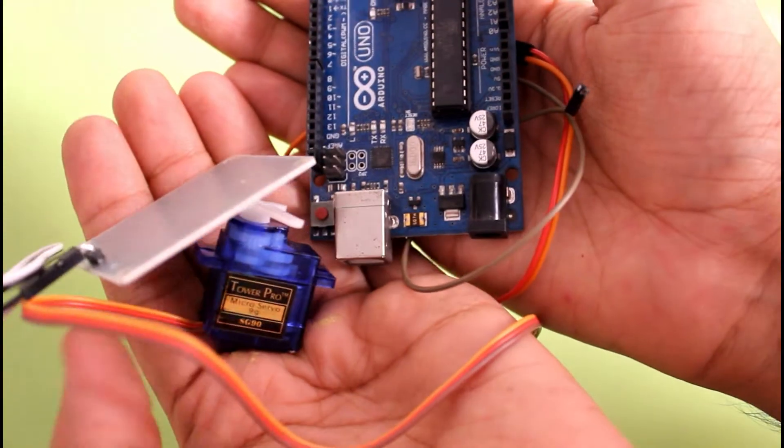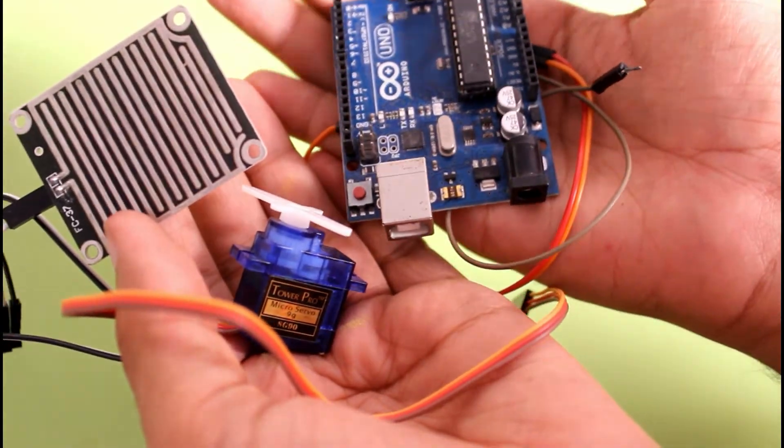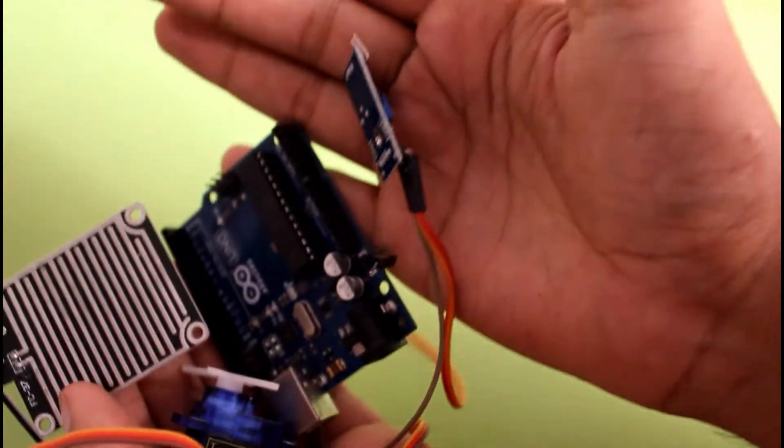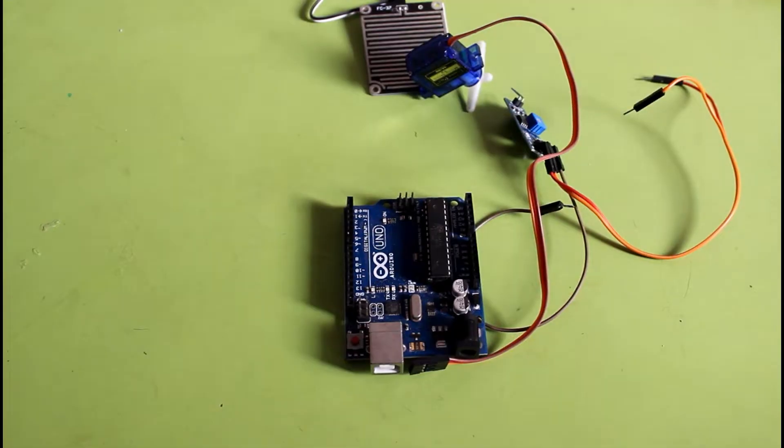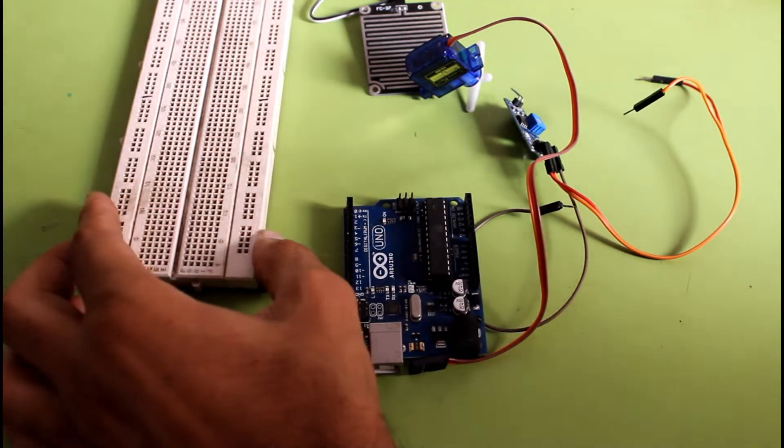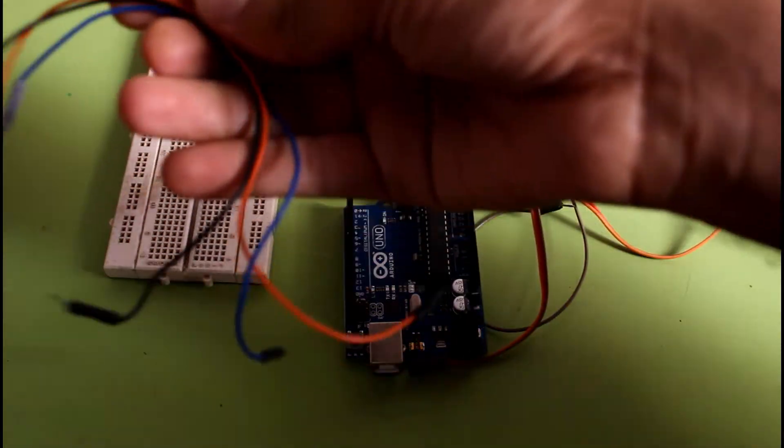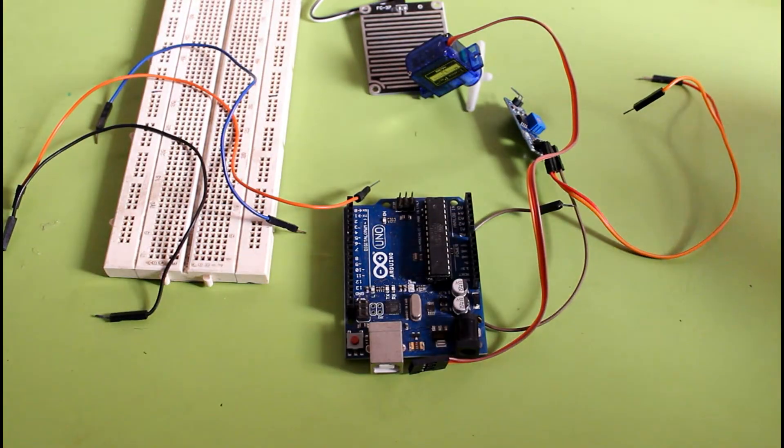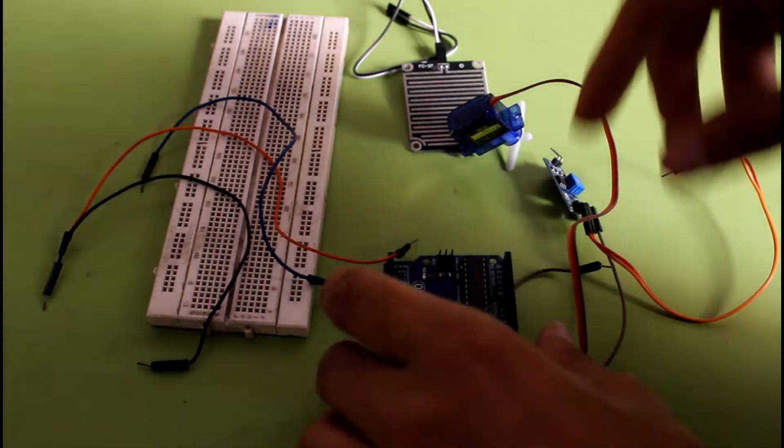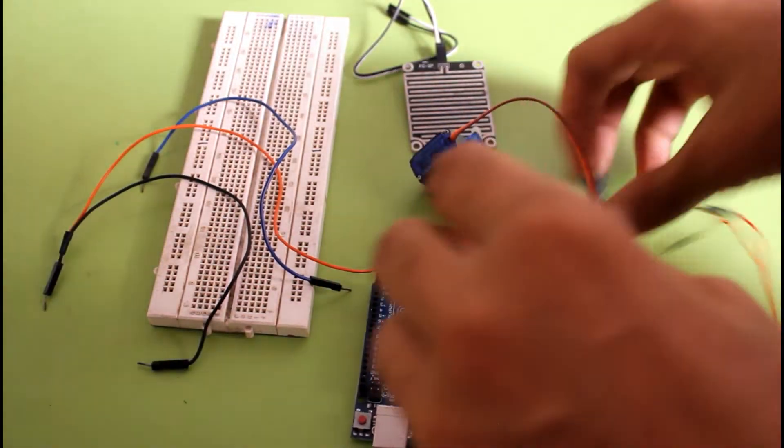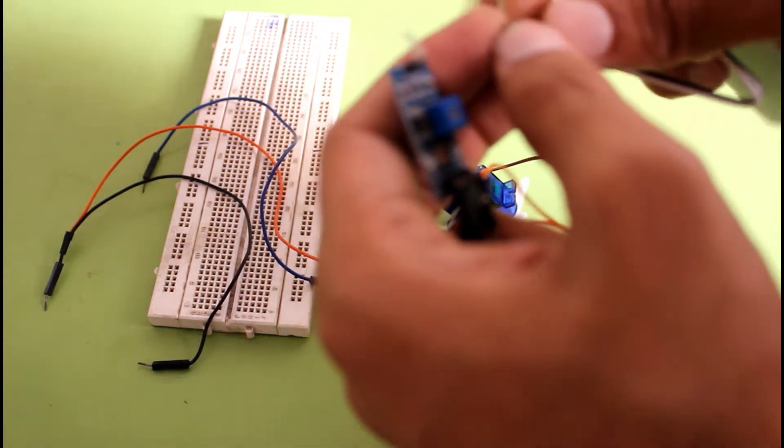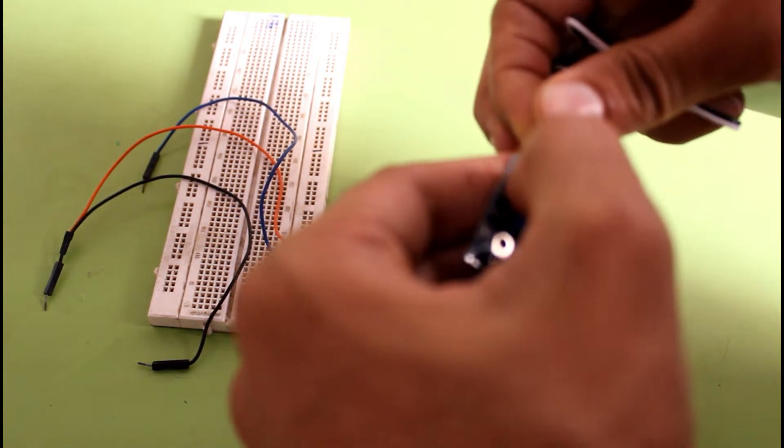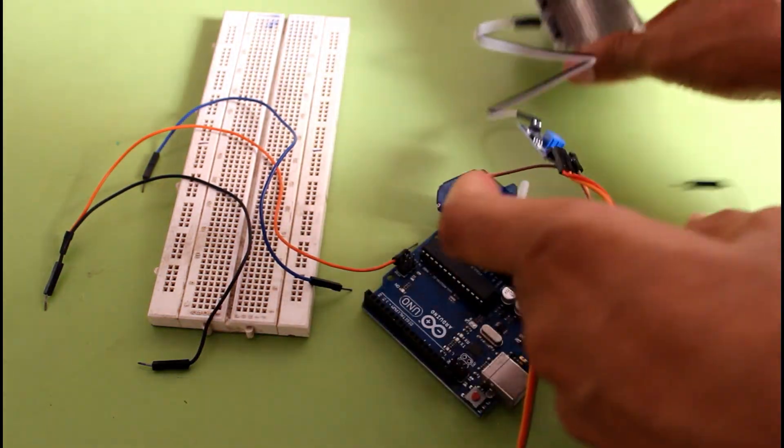Today in this video we are going to make an automatic umbrella set. For that we need these all components: an Arduino Uno R3, a range sensor, a servo motor, a breadboard, and some jumper wires. Okay, so first of all we will do some wiring work. It's quite easy.